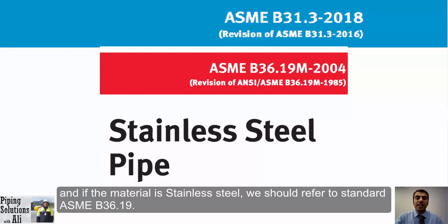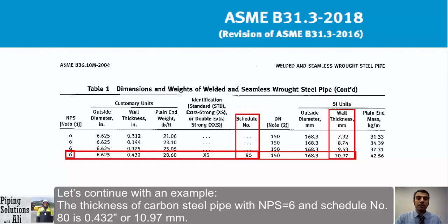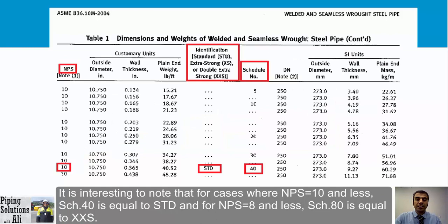For carbon steel pipe, refer to ASME B36.10; for stainless steel, refer to ASME B36.19. For example, the thickness of a carbon steel pipe NPS 6, Schedule 80 is 0.432 inches (10.97 mm). Interestingly, this is equal to the Extra Strong (XS) thickness — meaning specifying Schedule 80 or XS for NPS 6 gives the same wall thickness.